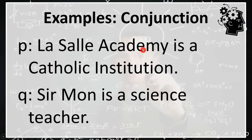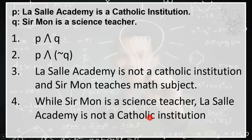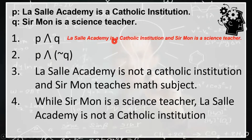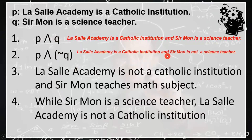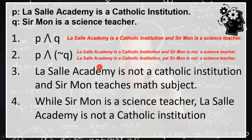Another example for conjunction: proposition P is LaSalle Academy is a Catholic institution, which is true. Proposition Q is Sermon is a science teacher, which is false because Sermon is a math teacher. Let's express the following conjunctions as English sentences. Number 1: LaSalle Academy is a Catholic institution, and Sermon is a science teacher. Number 2 negates Q: LaSalle Academy is a Catholic institution, and Sermon is not a science teacher. Or: LaSalle Academy is a Catholic institution, yet Sermon is not a science teacher.